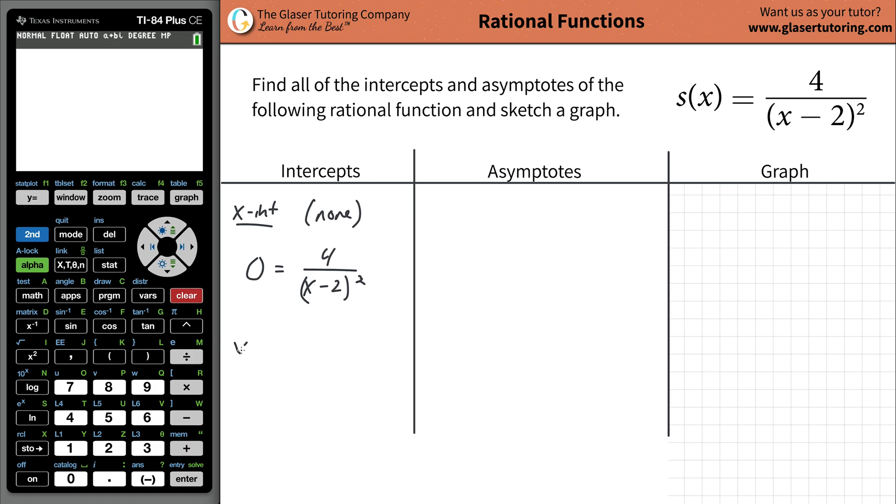Now to find the y-intercept, we do the opposite. We set x equal to zero. So everywhere you see x, just plug in a zero and solve for y. This would be 4 over negative 2 squared. Negative 2 times negative 2 is positive 4. So 4 over 4 equals 1. That's the y-coordinate. Y is 1 and x is 0. So the y-intercept is (0, 1).